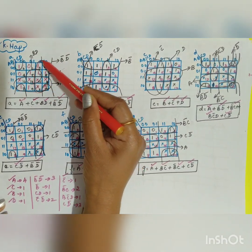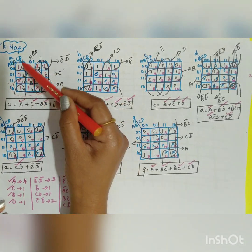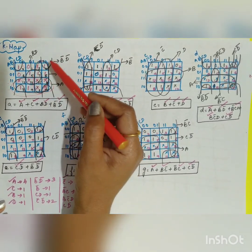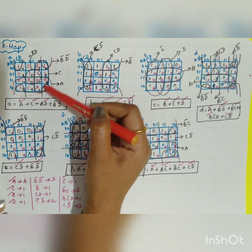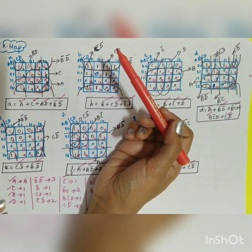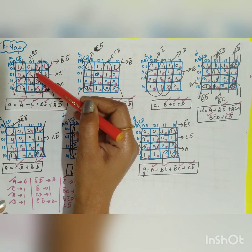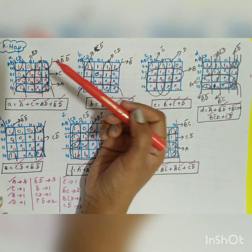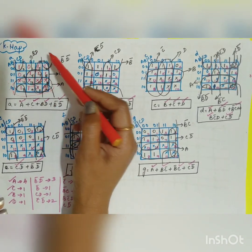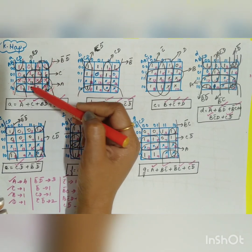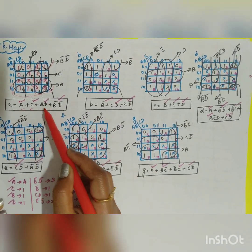On the K-map, adjacent ones can be grouped together — four ones can form one group, and two ones can be grouped along with the don't cares. You end up with four product terms, giving: a = AC + BD + B̄D̄ (plus one more term).